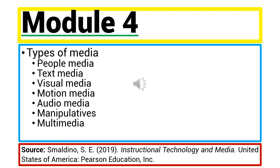Audio media are audiobooks, podcasts, cassette tapes, CDs, iTunes, and Spotify. Manipulatives are diorama, microscope, and play or paper models. Finally, multimedia is the combination of all the types of media mentioned here.